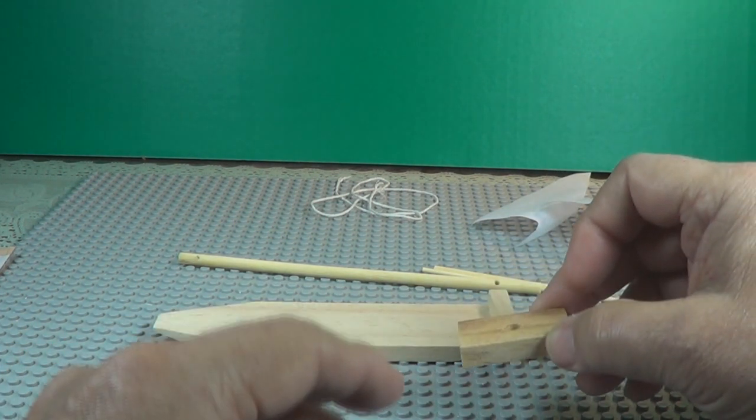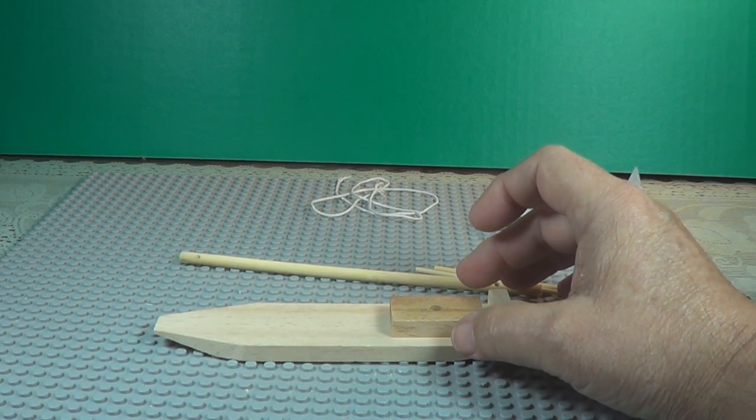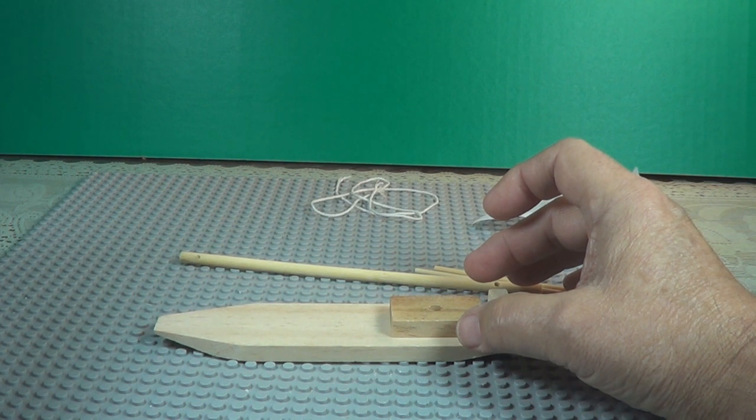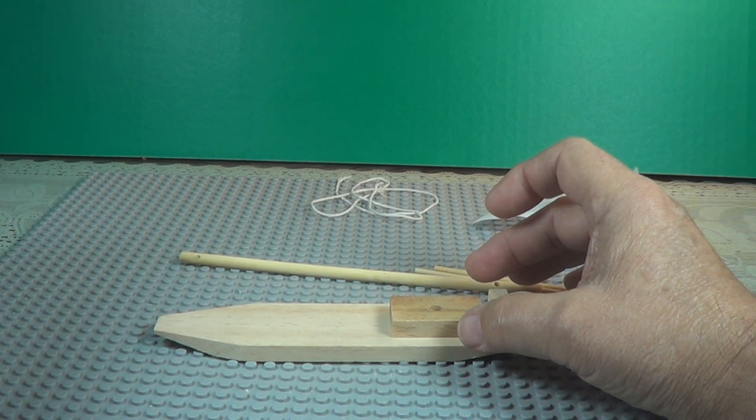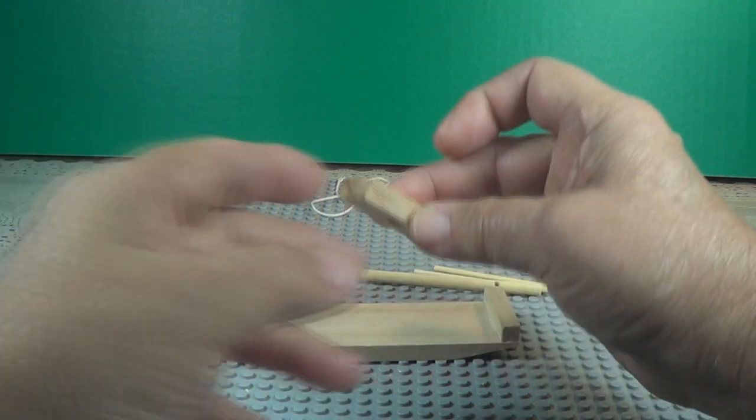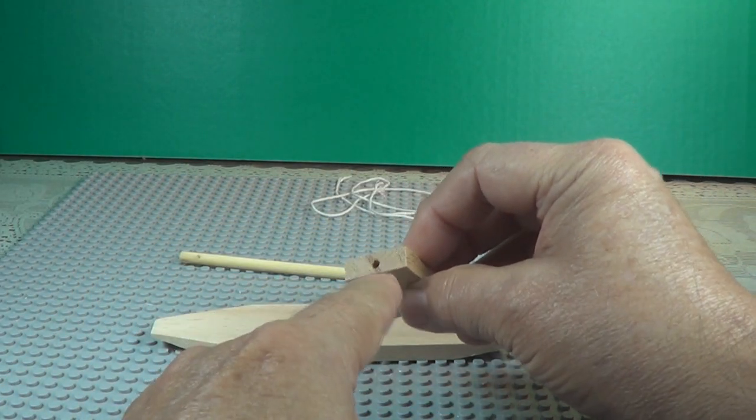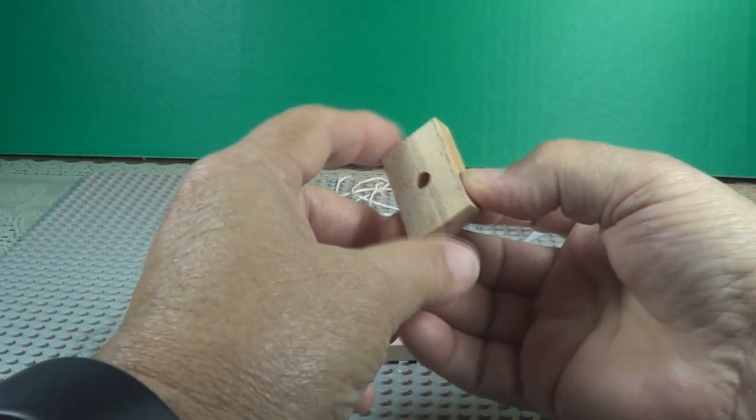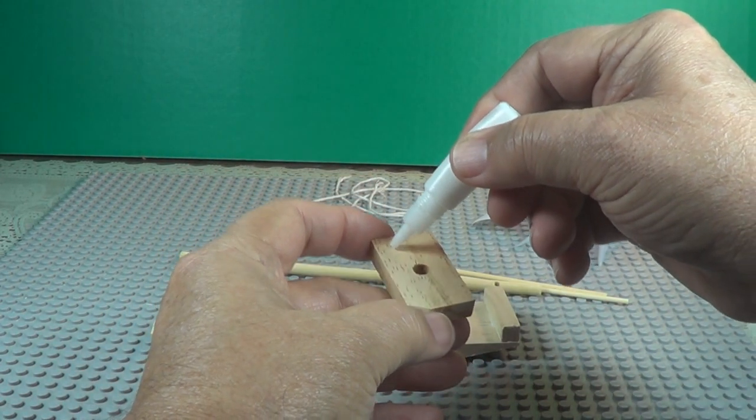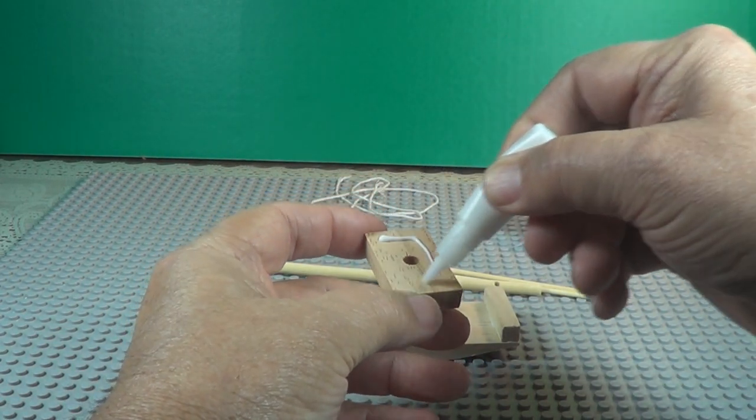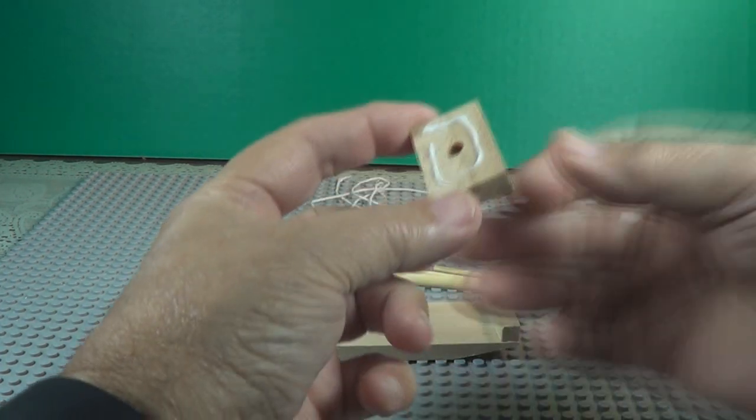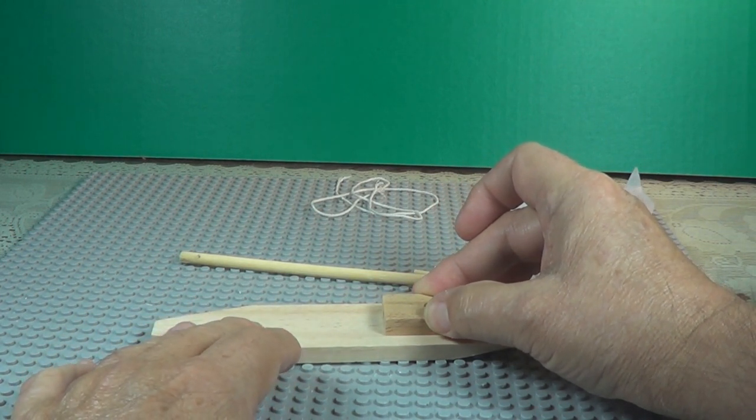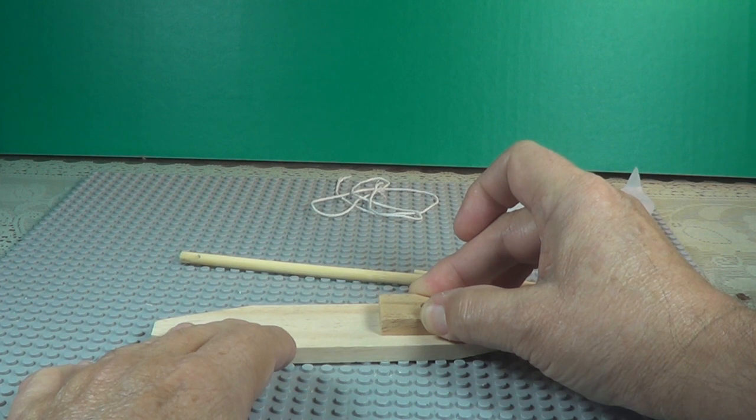Here's your mast support. Look at the instructions, see exactly where it goes. There's a hole that goes in the front. Right about there.